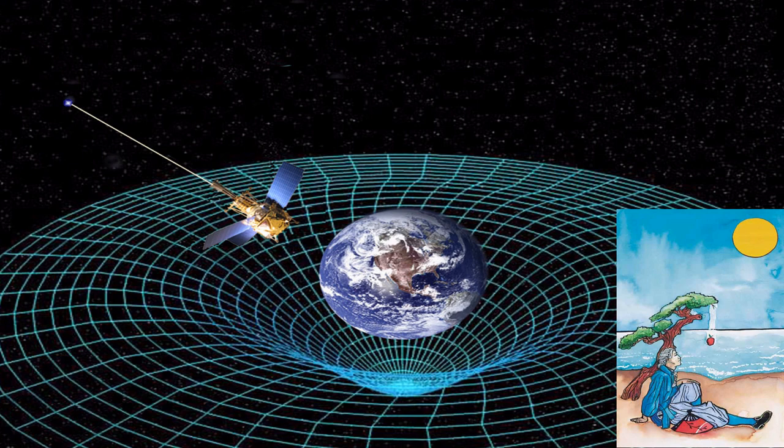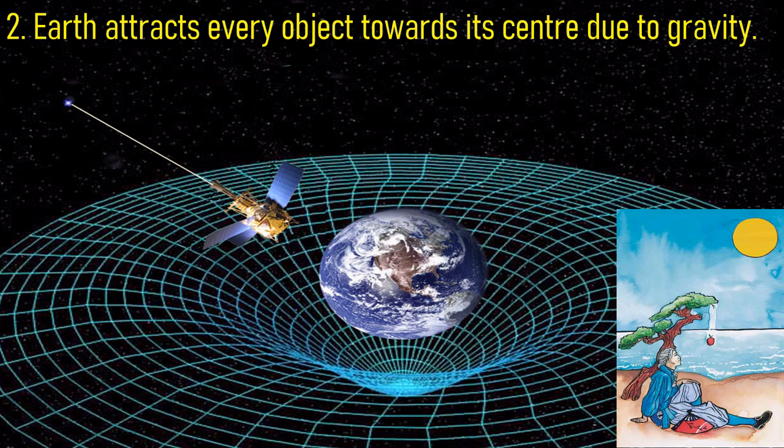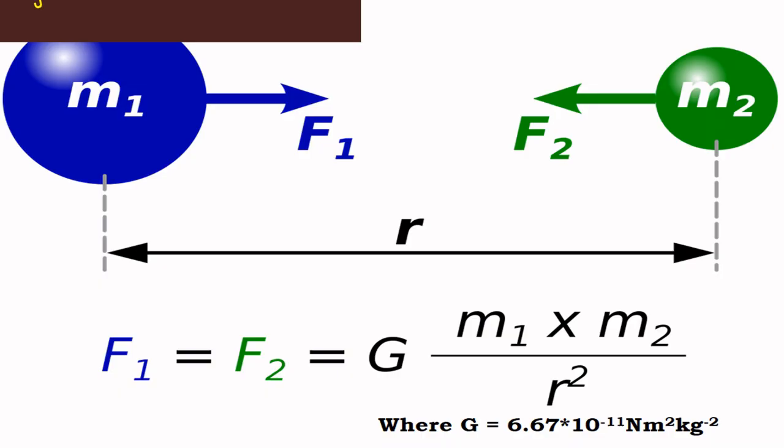Fact number two: Earth attracts every object towards its center due to gravity, so we can't escape out of the Earth. Fact number three: gravity is the force of attraction, not of repulsion, so every body attracts every other body.